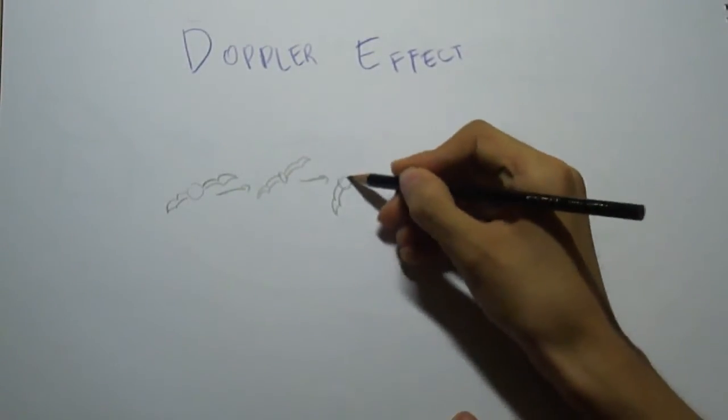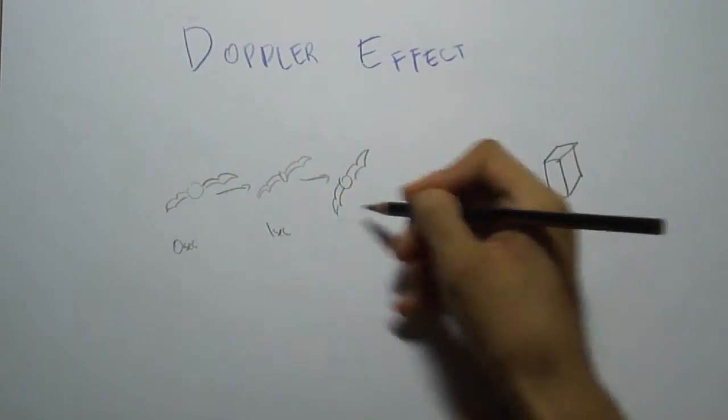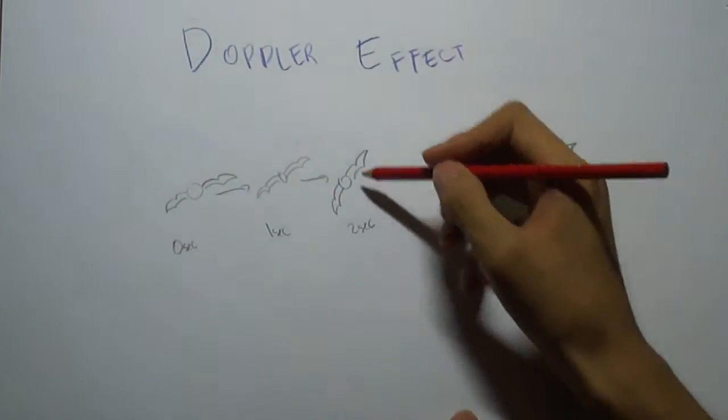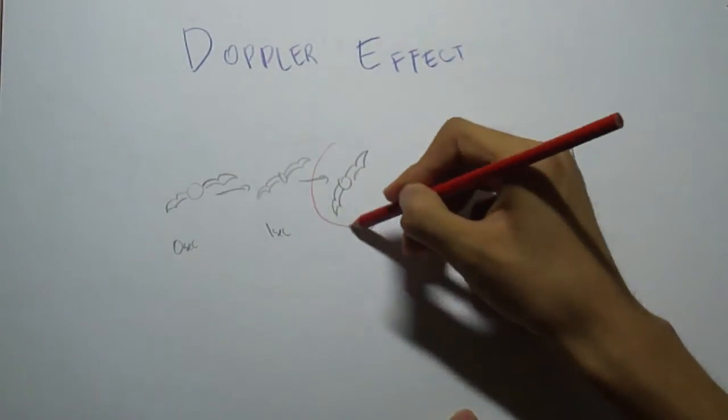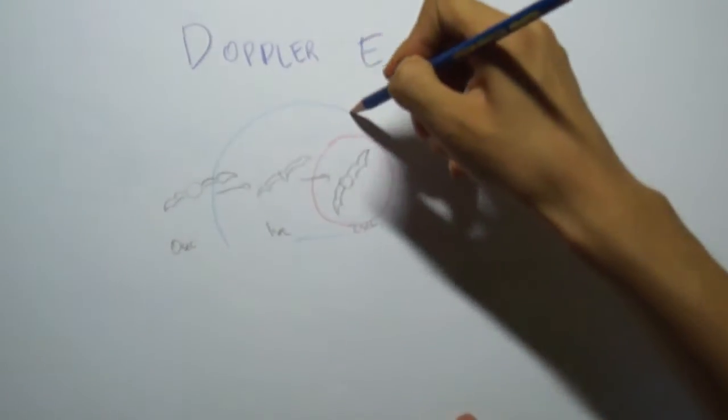If the bat and the target are approaching each other, the bat will hear an echo that is higher in frequency than the call it produced. If they are moving away from each other, the bat will hear an echo that is lower in frequency than the call it originally produced.